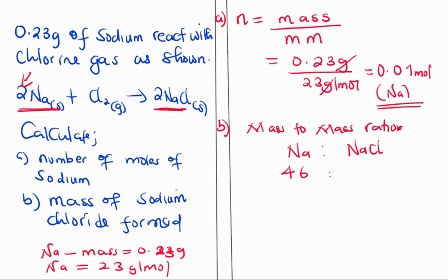And for sodium chloride we have 23 plus 35.5, times two, and there's a two in front which gives us 117.